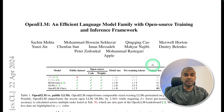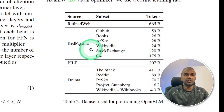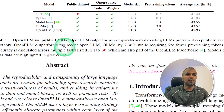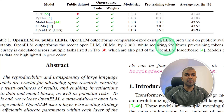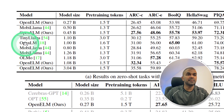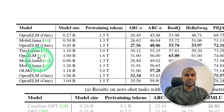Coming to the research paper, this model was trained on the Red Pyjamas, Dolma, Refined Web, and Pile datasets. Open ELM outperforms OLMo by 2.36% while requiring two times fewer pre-training tokens. The model has been compared with OLMo, MobiLlama, OpenLM, and TinyLlama — all small language models.